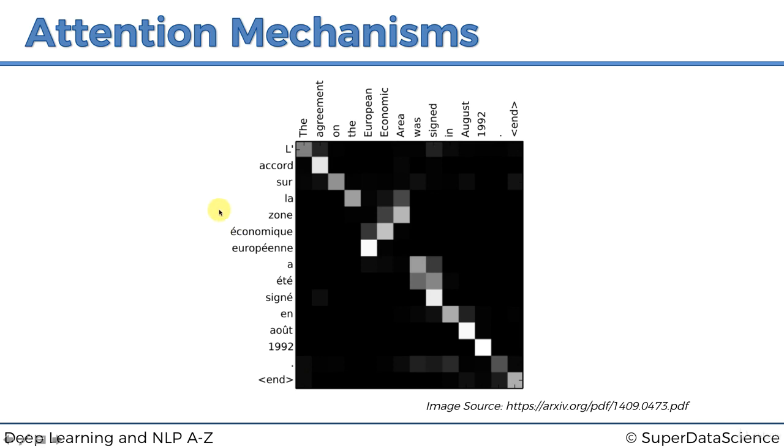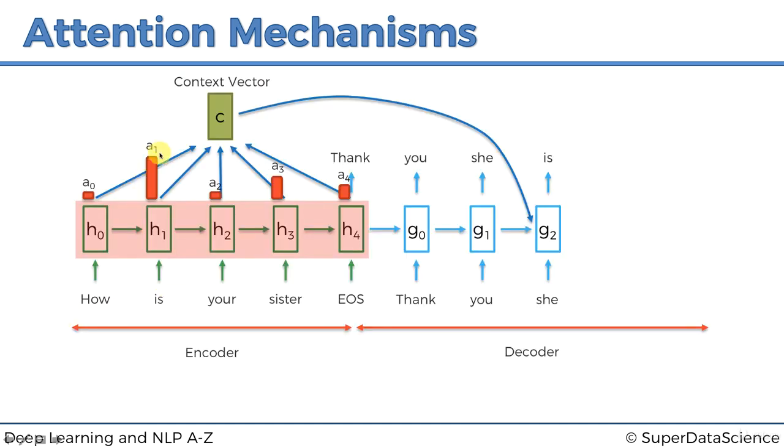But basically, what is going on here? However, these white dots is where the neural network was paying attention to as it was translating. So, remember, like the weights? Those white dots, they signify the weights on every single word as it was translating.